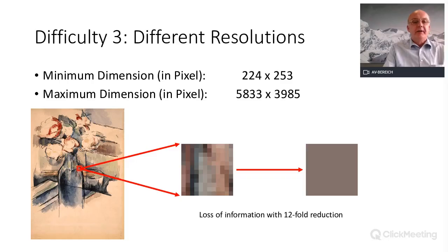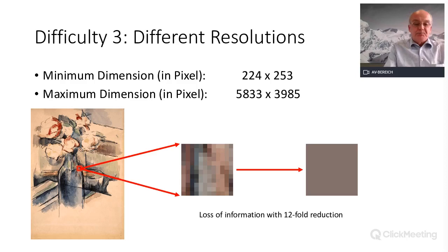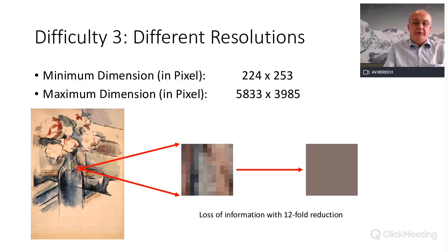The third difficulty is that the training images have very different resolutions. The smallest image is 224 by 253 pixels and the biggest is almost 6,000 by almost 4,000 pixels. You lose a lot of information when the image is reduced — here it's about a 12-fold reduction — so the information loss is significant.